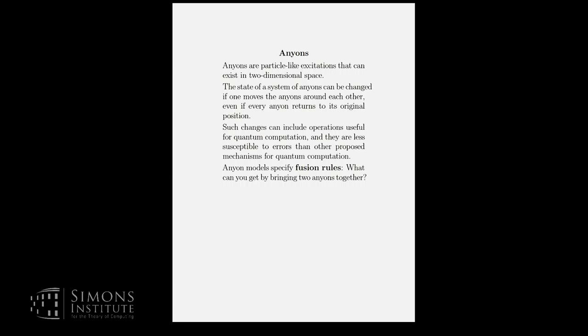one general aspect in anyon models is they tell you what happens if you bring two anyons together and let them interact, and the general situation is that there are various possibilities that can come out. They may annihilate. They may produce another anyon of a different sort. They may produce a different anyon of the same sort. All kinds of things can happen. Different models have different specifications for that.